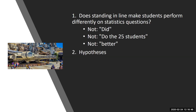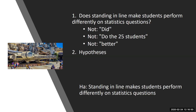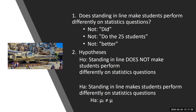Now we set up hypotheses. I like to set up the alternative first because it's kind of just a copy-paste: Standing in line makes students perform differently on statistics questions. With symbols: mu of those in line does not equal the mu for all of her classes. Then we add 'not' to fill out the null: Standing in line does not make students perform differently on statistics questions. With symbols: mu of those in line equals the mu for the class average — in other words, they're not different.